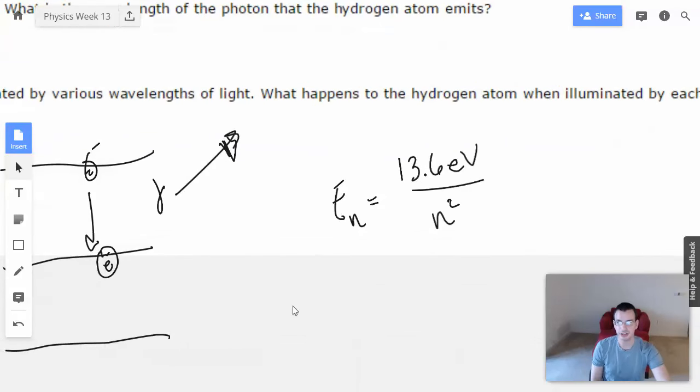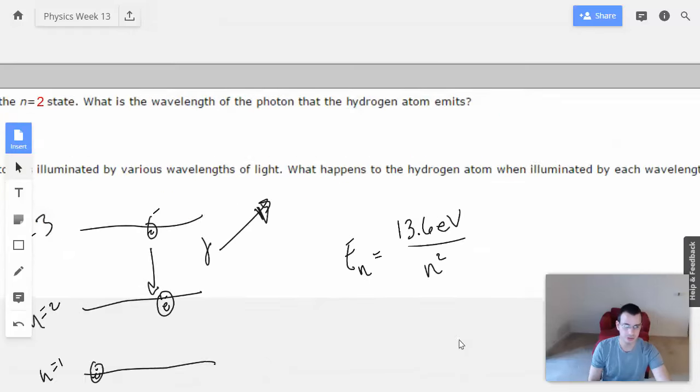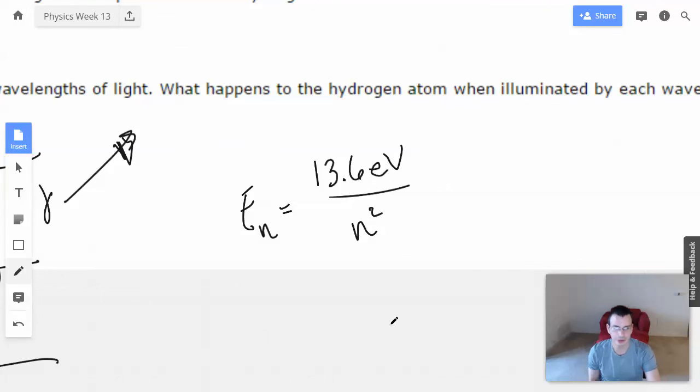So, the idea here is if we want to find energy from 3 to 2, then we're going to do energy 3 minus energy 2, which equals 13.6 over 3 squared minus 13.6 over 2 squared, which equals 13.6 of 1 over 9 minus 1 over 4.